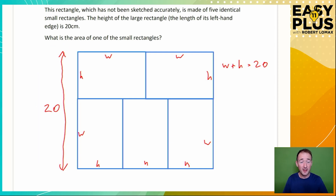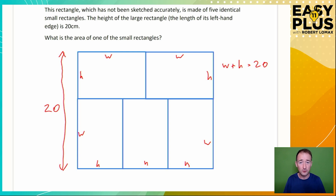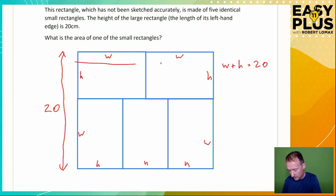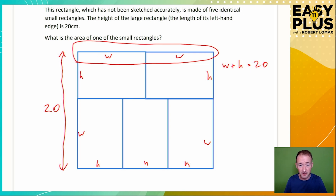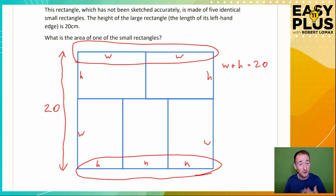A basic rule is that if you want to find the answer, you need as many equations as there are things that you don't know. Here there are two things we don't know: H and W. So we need two equations. We've got one: W plus H equals 20. For the other, if we look at the top, the width of the big rectangle is made up of two Ws. And if we look at the bottom, the width is also made up of three Hs. So we can write: two Ws are the same as three Hs.